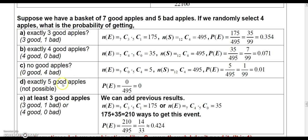And then exactly five good apples, well, that one's not possible because since you're only choosing four apples, there's no way you can get five good apples. So, that probability would have to be zero.